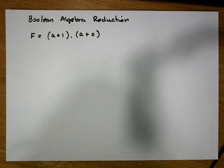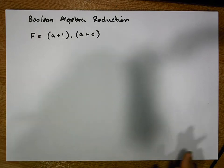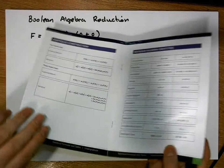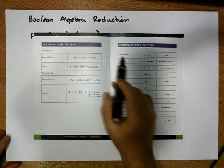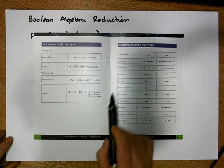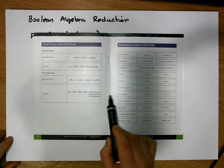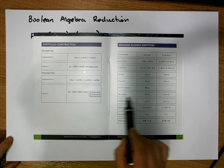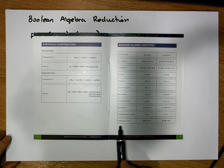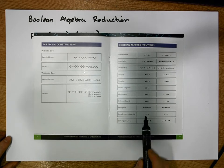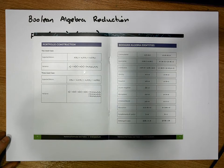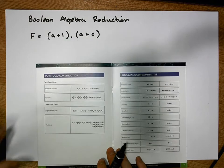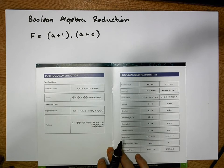What we know is we have a number of important identities. We've previously looked at these in a previous video — we had the Commutative Law, the Associative Law, Distributive, the Identity, Negation, Double Negation, Idempotent Law, Universal Bound, Absorption, Complements of 1 and 0, and De Morgan's Laws. These identities are really important for us and are going to help us with our reductions.